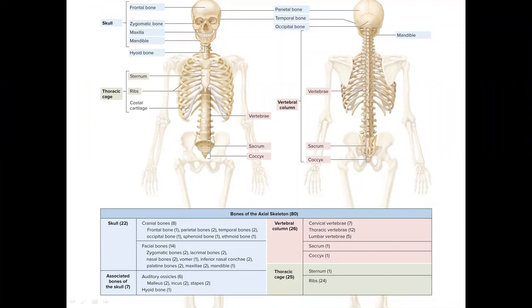This lesson will take a look at the axial skeleton. You can see a picture here of the different bones which are involved. We're going to be looking at the skull bones, the vertebrae, and the rib cage.